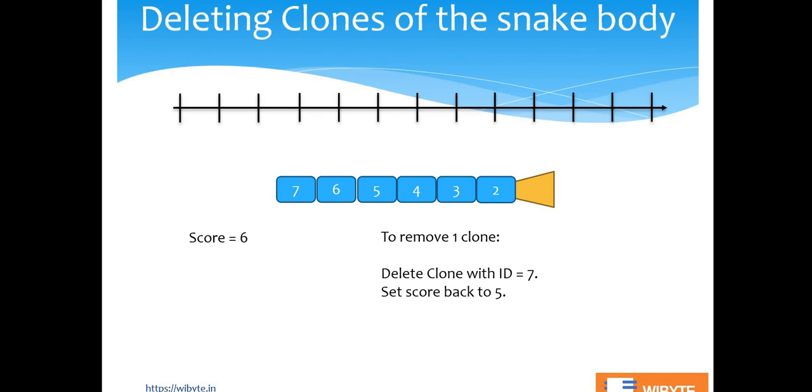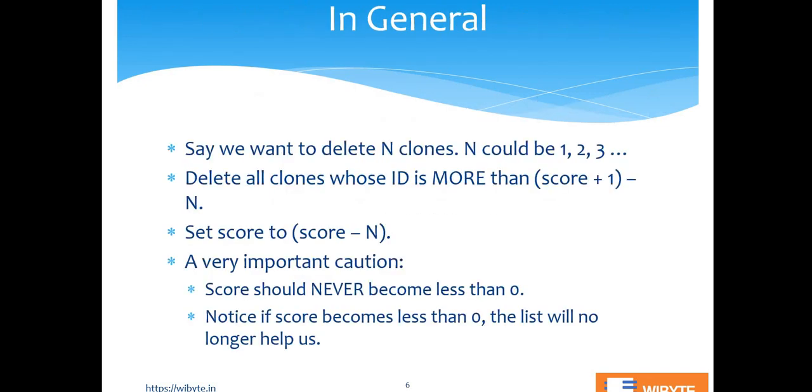Just to push this a little bit further. If I want to delete, say, two clones. The logic is still the same. In this example, I will say, I will delete clone number seven and clone number six because these are the end of the tail. To do this, I have to really, so I'll delete ID six and seven. And I'll also set the score back to four. So, which means, in general, I could delete N clones. N could be one, two, three, and so on and so forth. And I will delete all clones whose ID is more than score plus one minus N.